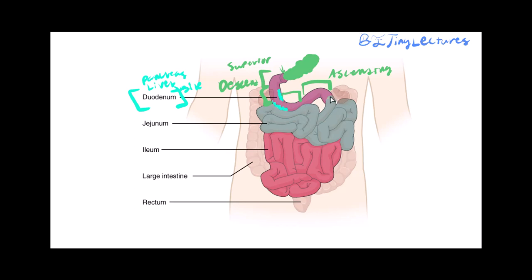Past the duodenum, food enters the jejunum, and eventually the ileum. The ileum is the largest portion of the small intestine and is where most absorption happens — all the nutrients are absorbed here. The duodenum sets up the chyme with enzymes, it travels through the jejunum, and the ileum absorbs all the nutrients. We call it the 'small' intestine because its diameter is only about one inch, compared to the large intestine's three-inch diameter.